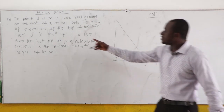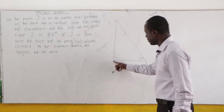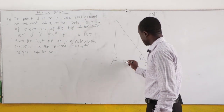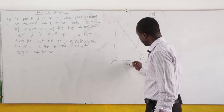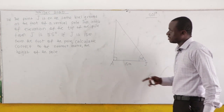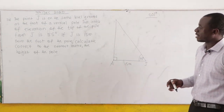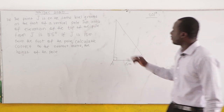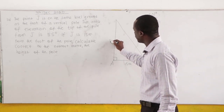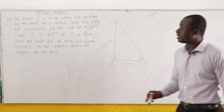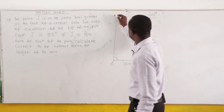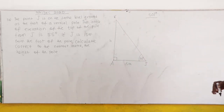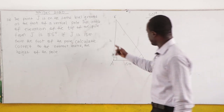J is 15 meters from the foot of the pole — let's call the foot A. We need to calculate the height of the pole correct to the nearest meter. Let the height be h and the top of the pole be K.